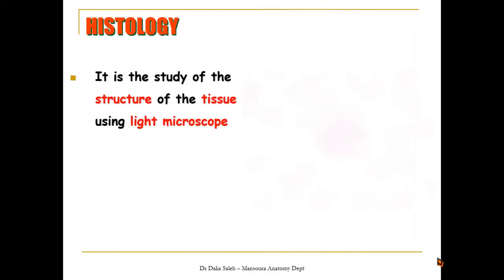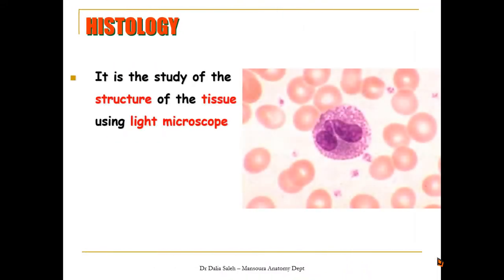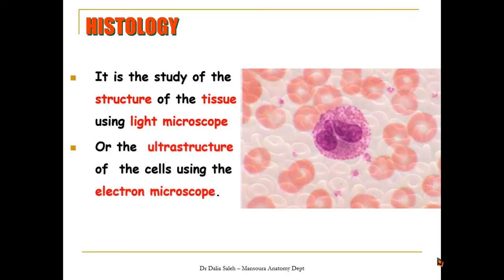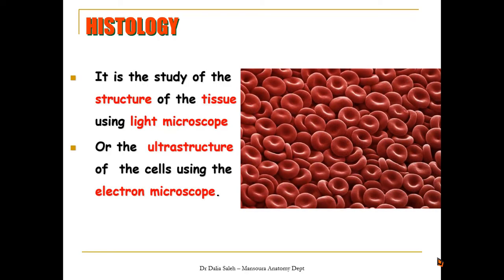By definition, histology is the study of the structure of tissue using an aid like the light microscope. We can see here in this blood film the red blood cells, and in the middle a white blood cell. If we want more details we can use another aid like the electron microscope — either the transmission or the scanning electron microscope — to see more details of the cell.